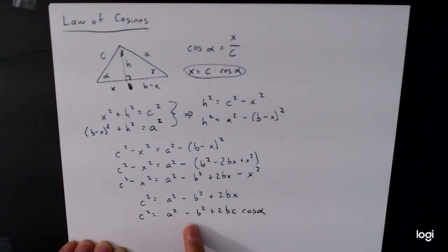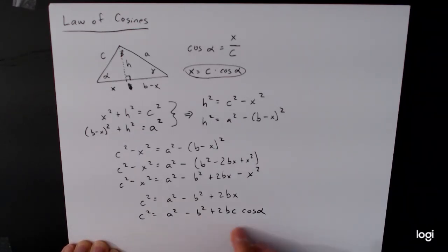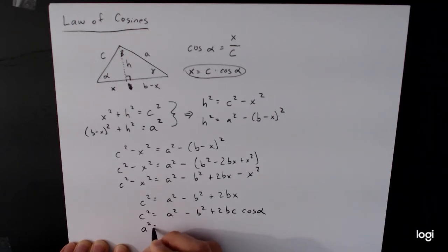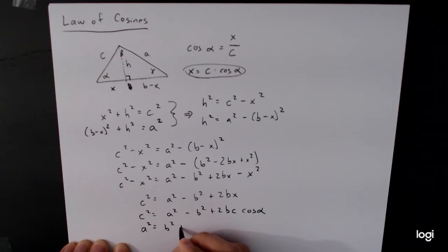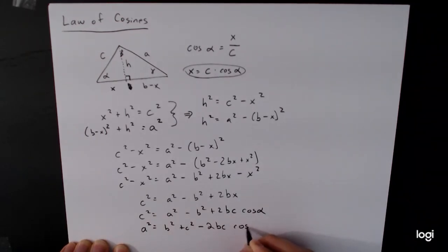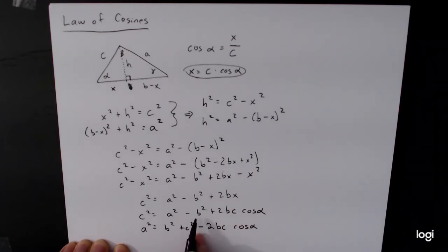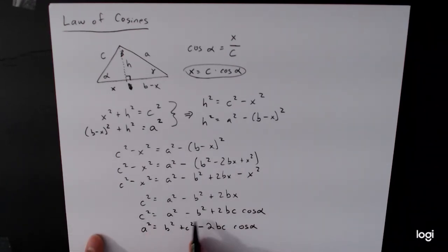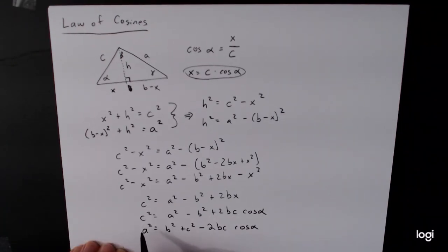Lastly, we rearrange by adding b² and subtracting 2bc·cos(α) from both sides, and swapping sides of the equation, to get a² = b² + c² − 2bc·cos(α). This is the more conventional way of writing it.